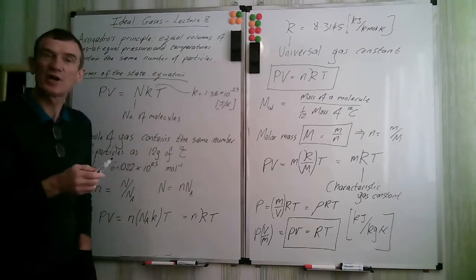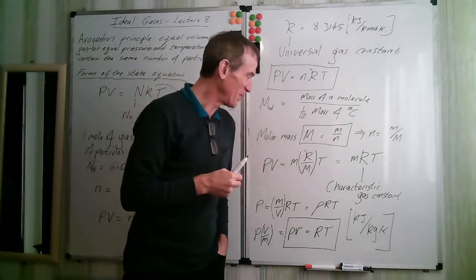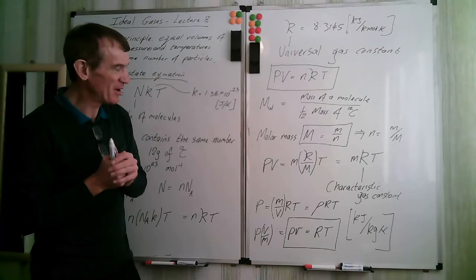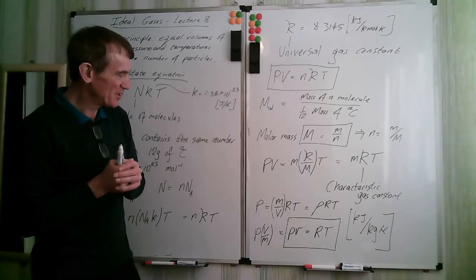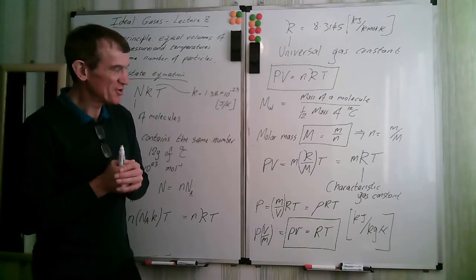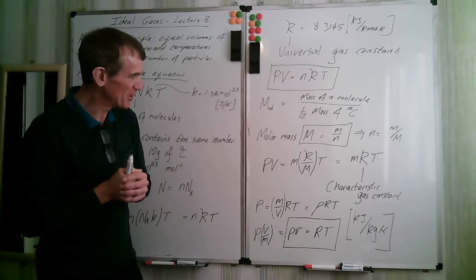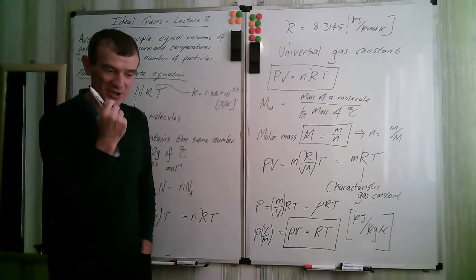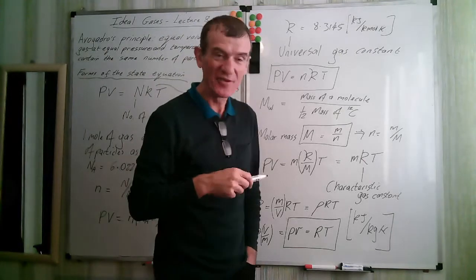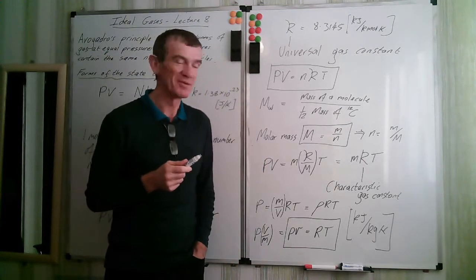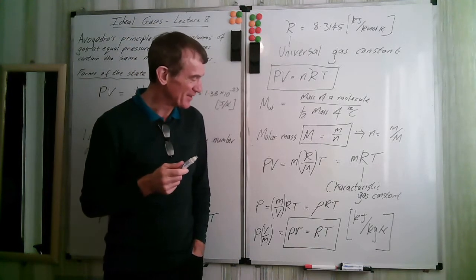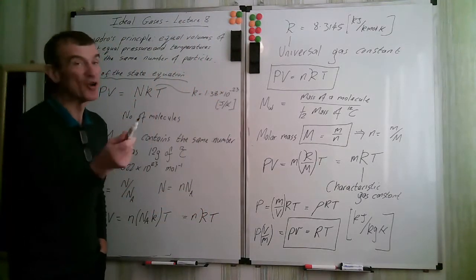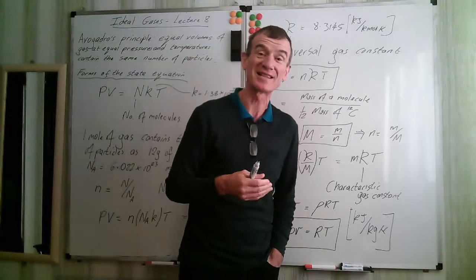This equation of state works for a large range of gases, provided the density and pressures don't become too great — we're talking about rarefied gases. It does cover quite a large range, but it can break down. In particular, very close to the critical point — which we mentioned with vapours — this equation won't work at all. Well away from that, it works quite well, and it's the law we're going to use on this course.